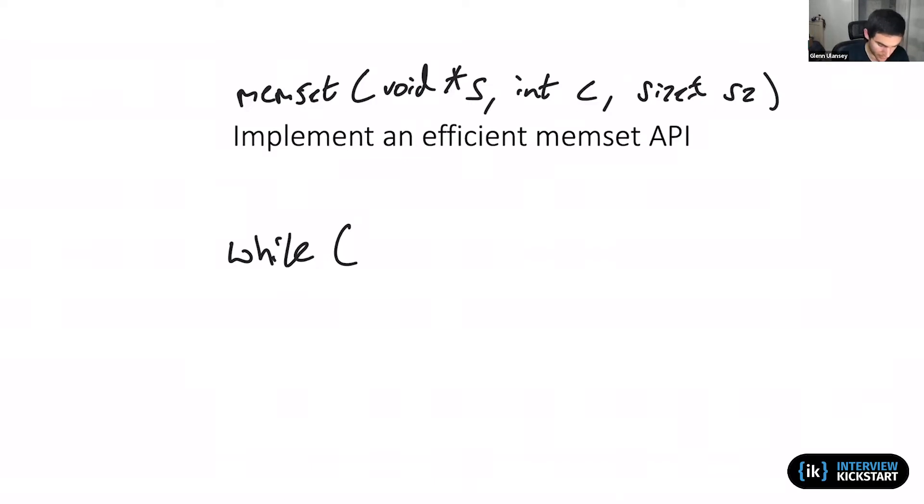So conceptually, hopefully we all agree that we want to loop and we can say we're going to loop until our byte count is exhausted. For each step along the way we are going to set the current index into s to c.